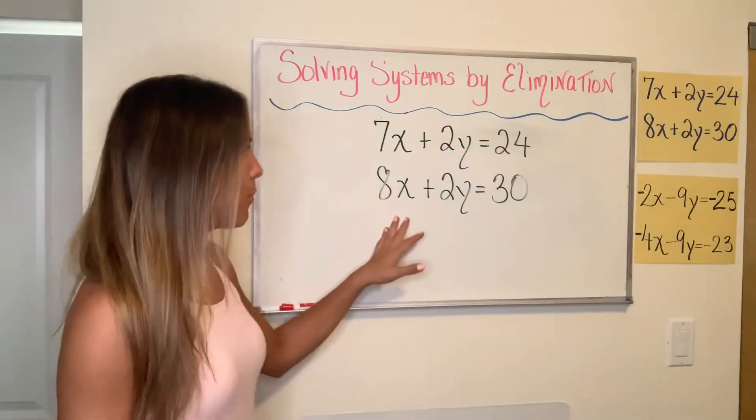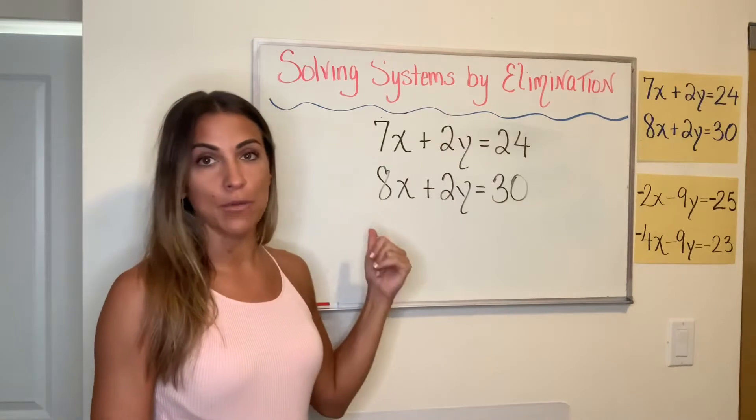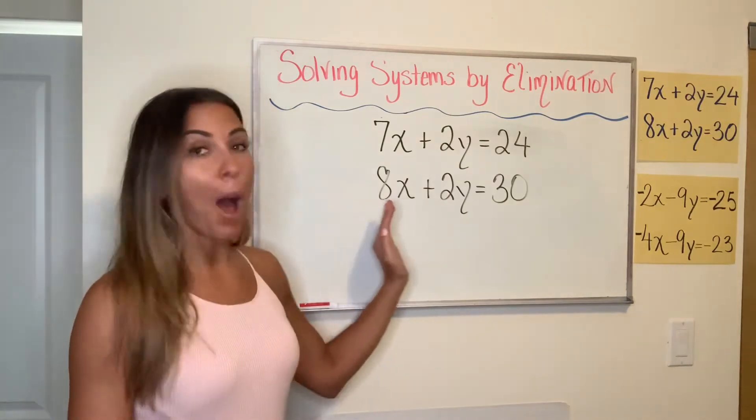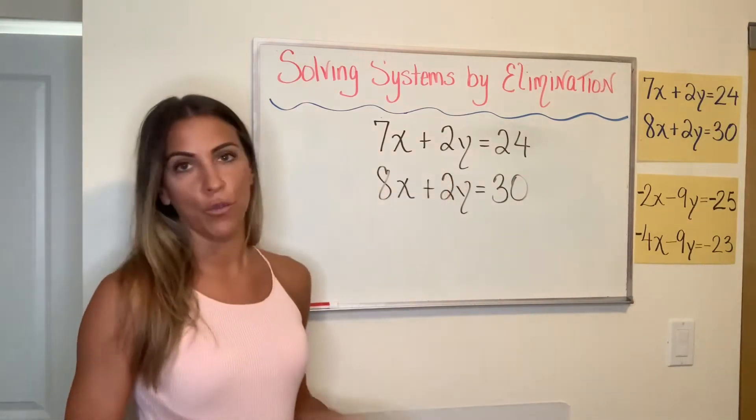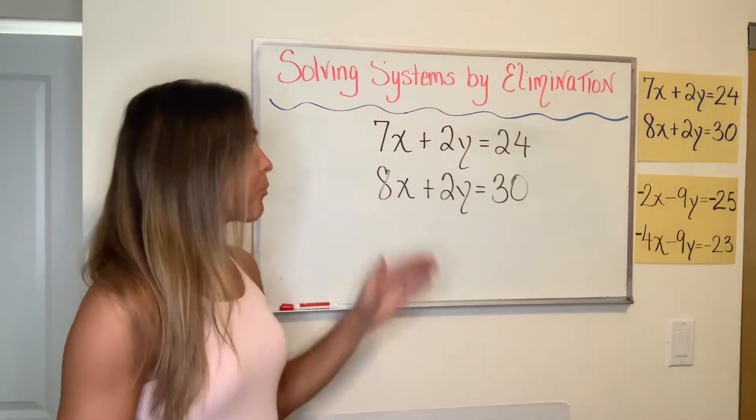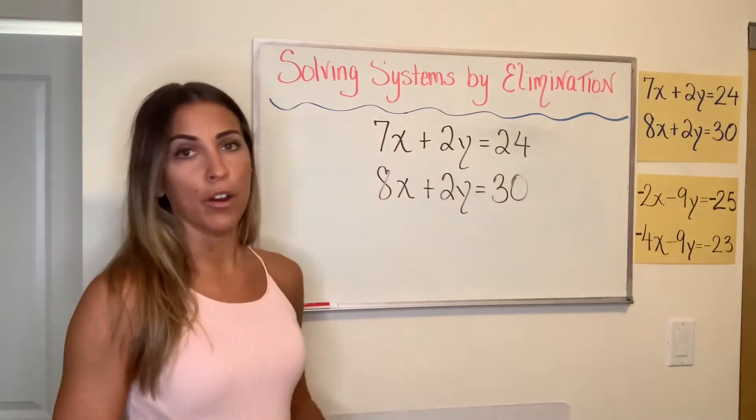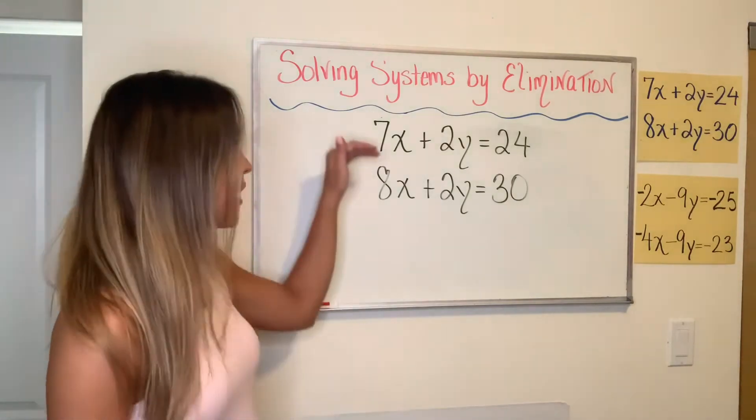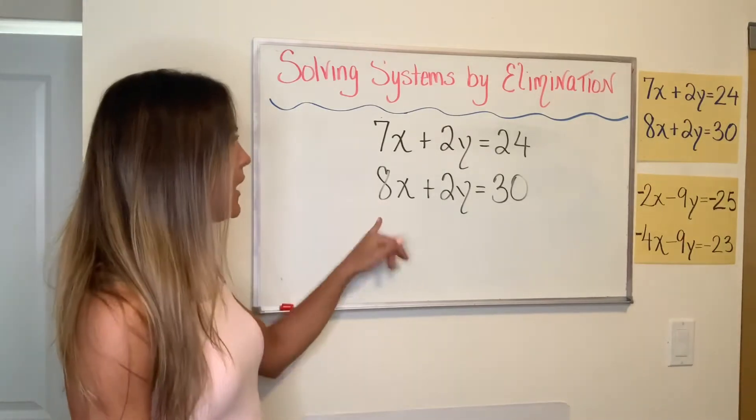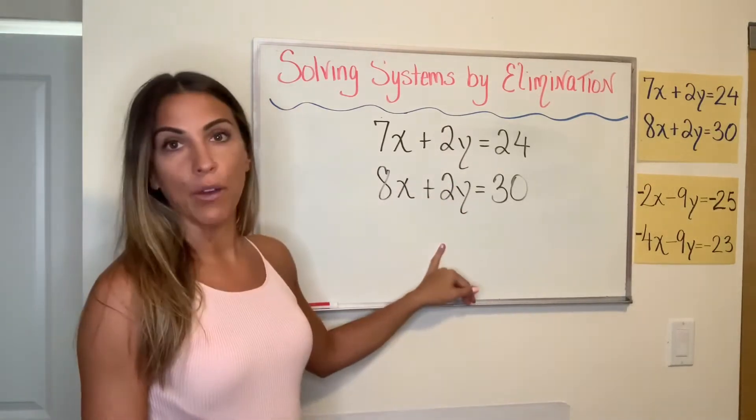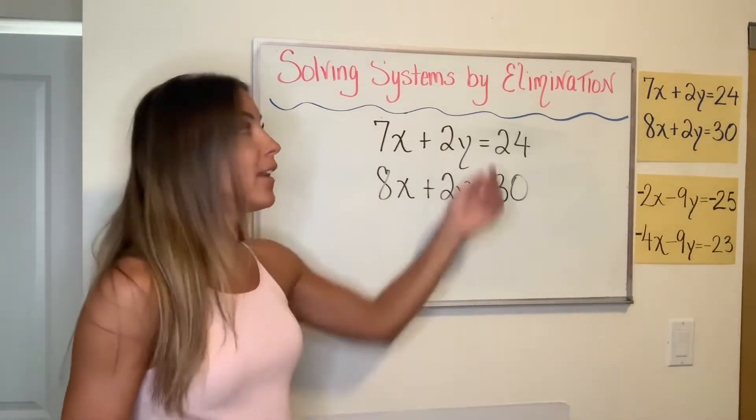So in this example, what you'll notice is different from the first video is that there aren't opposite coefficients for either of the variables. We have a seven and an eight for the X's and a two and a two for the Y's. So we cannot eliminate a variable here by adding. If I tried to add these together, I wouldn't get anywhere. I'd get 15X and I would get 4Y. So neither of the variables would get eliminated.